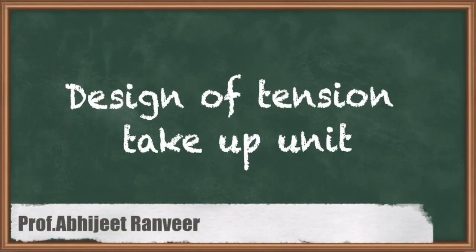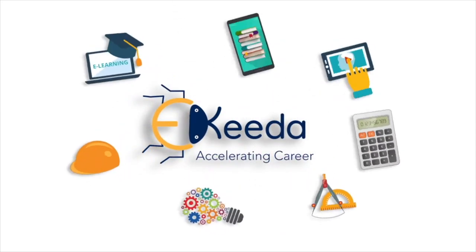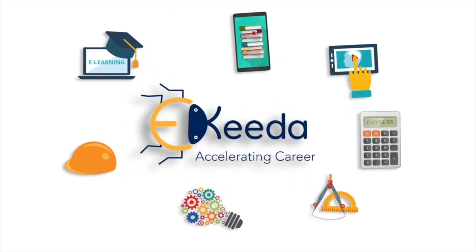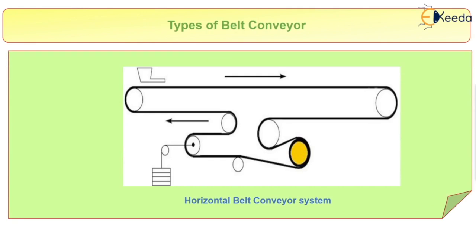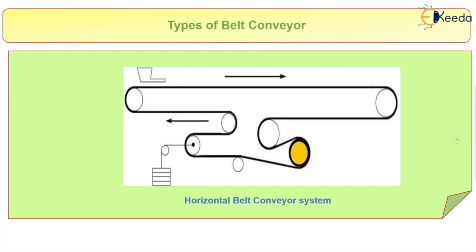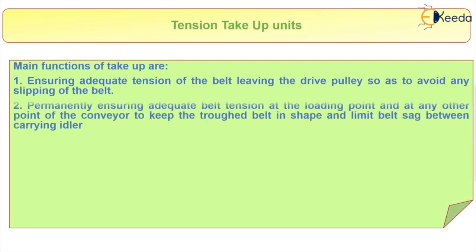Here we are going to discuss about the tension take-up unit. We have already seen about the conveyor belt conveyor system. There is one part, as you can see here, we have a particular load and it is connected to a particular tool — this is called a tension take-up system, which plays an important role in the system. Now, what does it do?